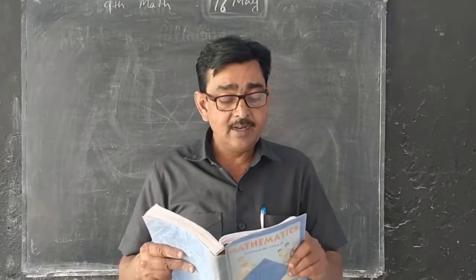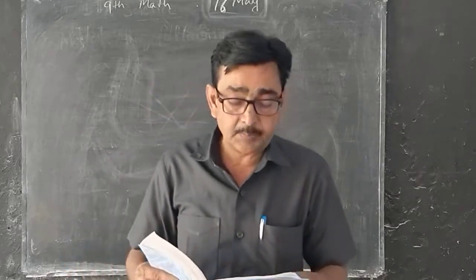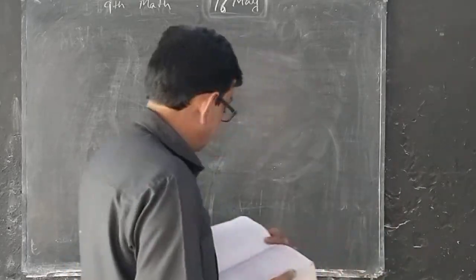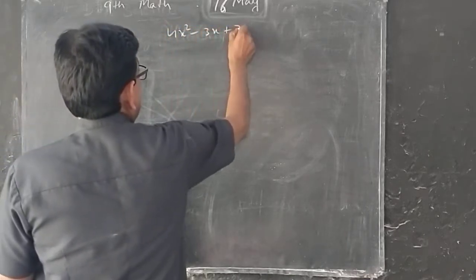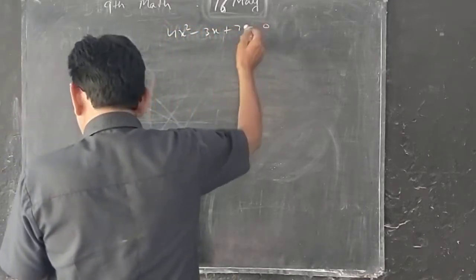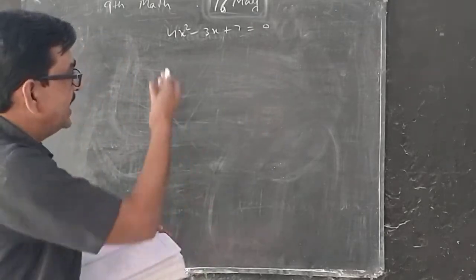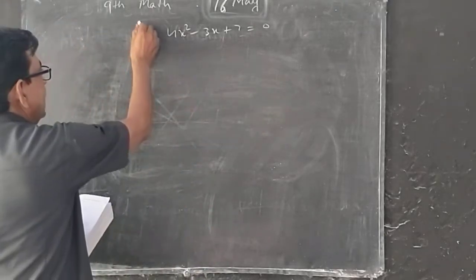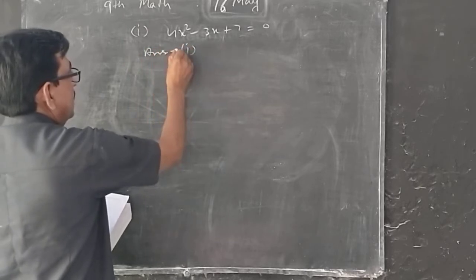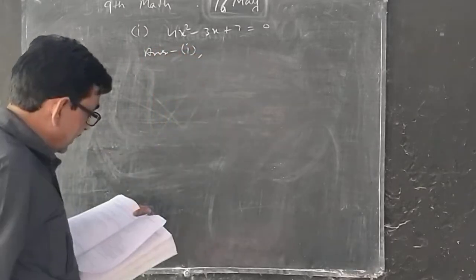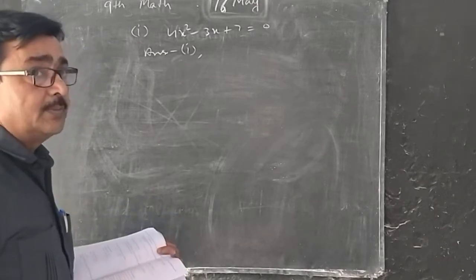Let me make a bracket for x squared minus 3x plus 7.